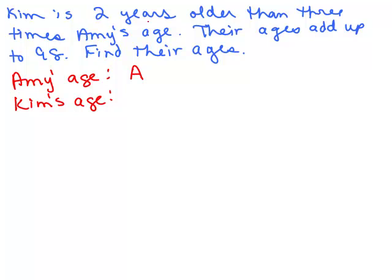So Kim's age, it's 2 years older. That means you're going to add 2 to something, right? So you're going to add 2. 2 years older than 3 times Amy's age. Now if Amy's A, 3 times her age is going to be 3A plus 2. So we've got Amy's age and we have Kim's age.